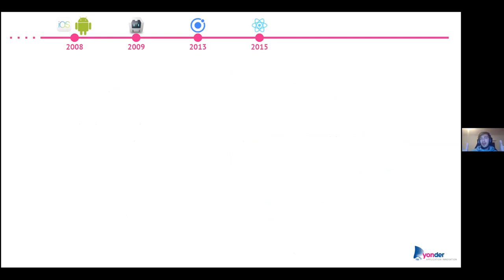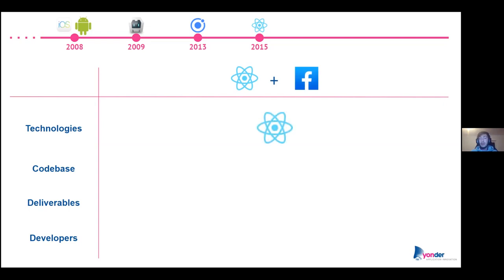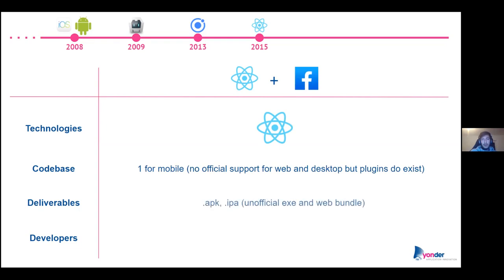The major competitor for Ionic appeared in 2015 in a hackathon made by Facebook — it's called React Native, and it's backed by Facebook. It uses React, obviously. React Native has mostly support for mobile, so deliverables are primarily in the mobile ecosystem. It can also have unofficial support for web and desktop applications, but only using workarounds and plugins — there's no official support. You'll need a proficient JavaScript or React developer working on this one.